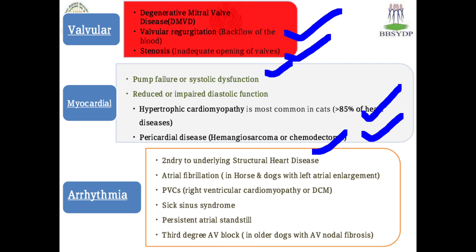Specific arrhythmia conditions include atrial fibrillation in horses and dogs with left atrial enlargement, PVCs or right ventricular cardiomyopathy, dilated cardiomyopathy, and sick sinus syndrome. PVC refers to premature ventricular contractions, in which the heart beat is irregular and increased.